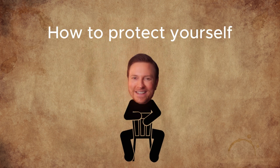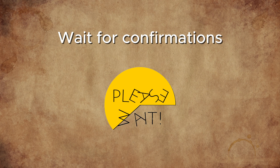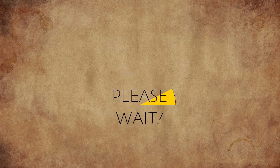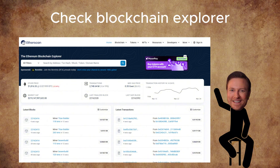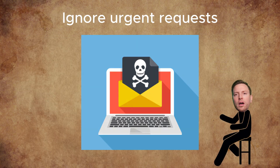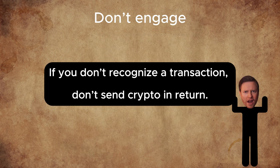How to protect yourself. Wait for confirmations — real USDT transactions are confirmed by the blockchain. Check a blockchain explorer like Etherscan to verify. Ignore urgent requests; hackers pressure you to act fast — don't. If you don't recognize a transaction, don't send crypto in return.